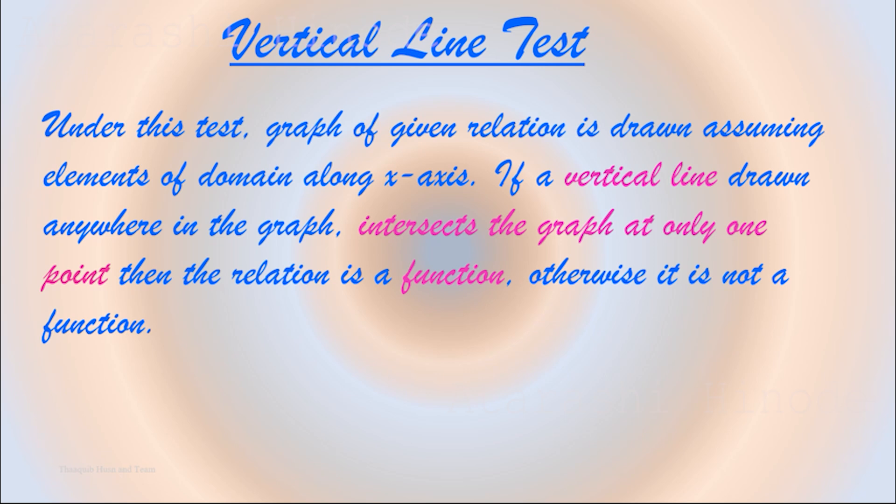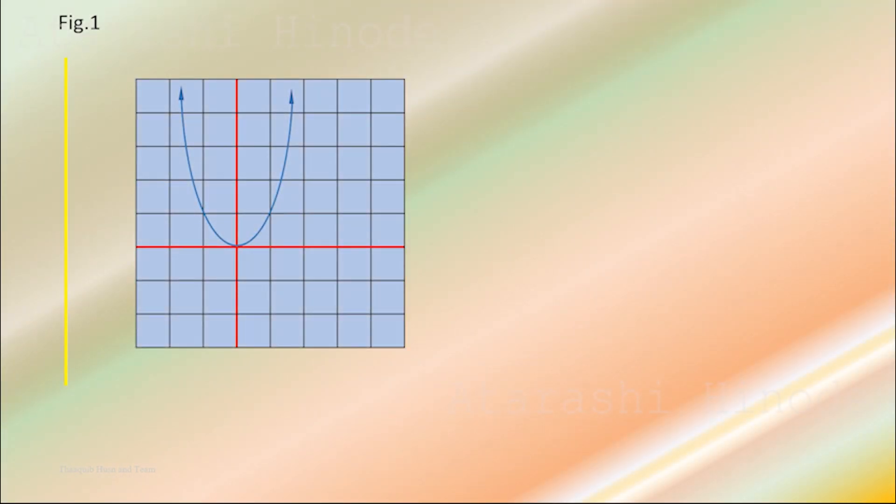Let us consider some graphs. Let us examine this graph. If you move this vertical line from left to right of the graph, you can see that the line doesn't intersect the graph more than once. So, this graph of relation is a function.